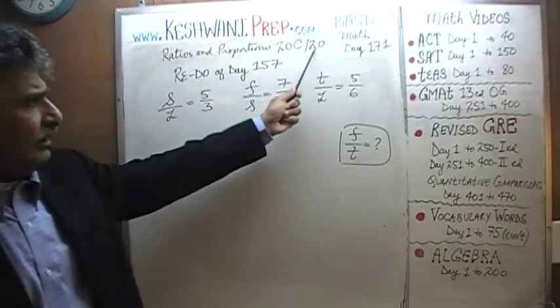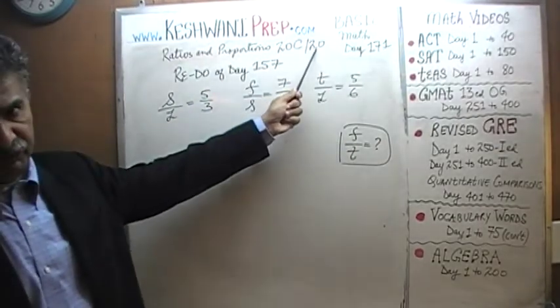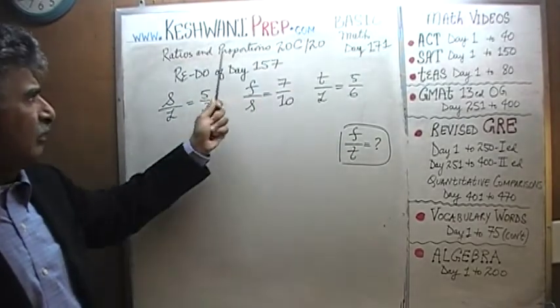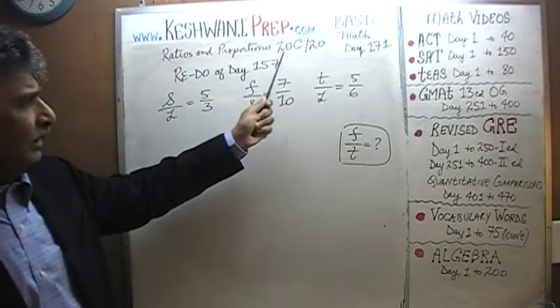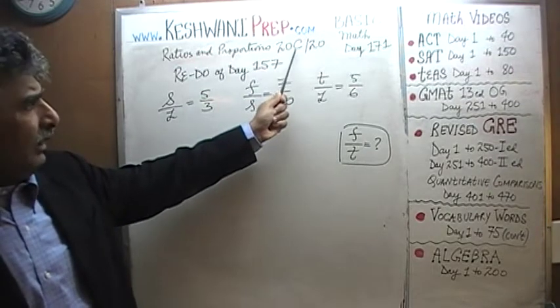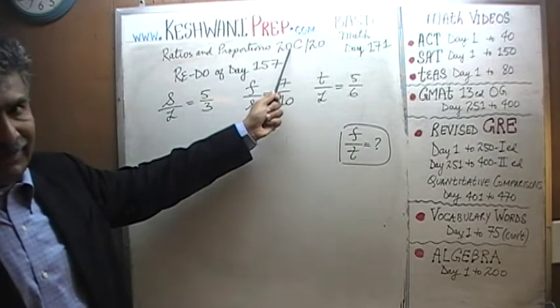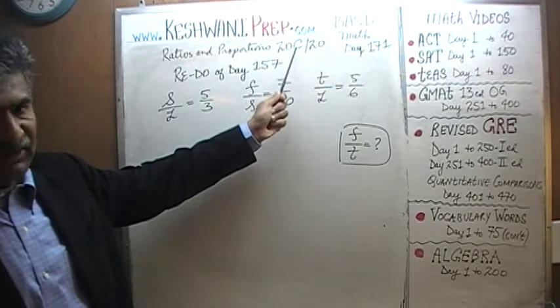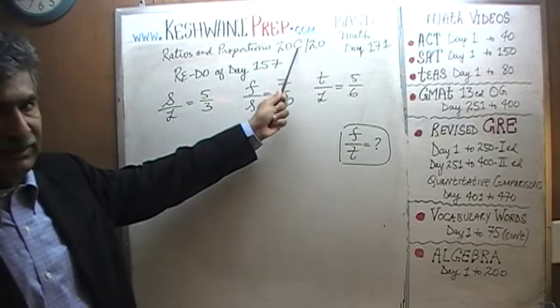Originally I had planned to make 20 lessons — 20 videos on the topic of ratio and proportions. I decided to add two more to it, hence 20A, 20B, and today is the very last one, 20C.